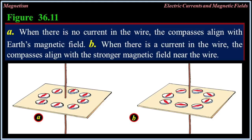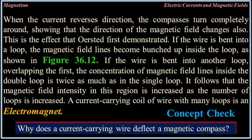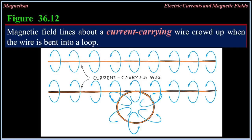When there is no current in the wire the compass is aligned with the Earth's field; when current flows, the compass aligns with the stronger magnetic field near the wire. When the current reverses direction, the compasses turn completely around, showing that the direction of the magnetic field changes also. This is the effect that Ørsted first demonstrated. If the wire is bent into a loop, the magnetic field lines become bunched up inside the loop. If the wire is bent into another loop overlapping the first, the concentration of magnetic field lines inside the double loop is twice as much as in the single loop.